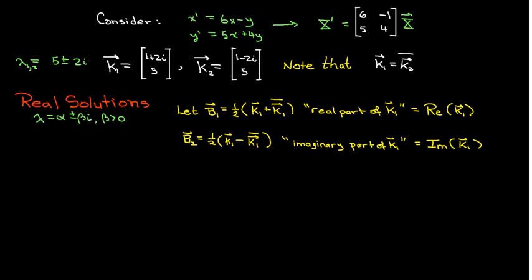b2 is the imaginary part. In the first component of k1, the imaginary part is 2. Since the second component doesn't have anything multiplied by i, the imaginary part is 0.